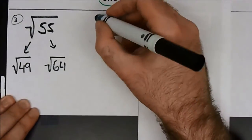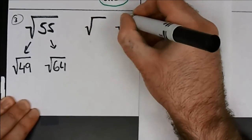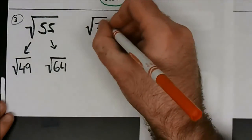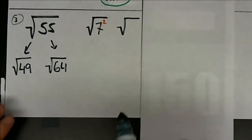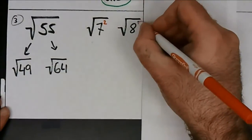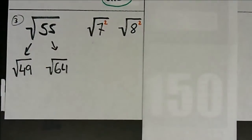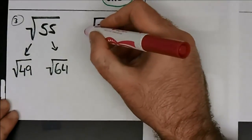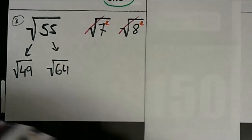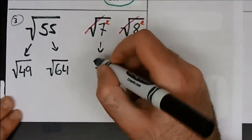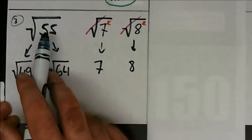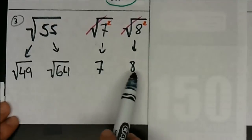So I'm going to write them up here. 49 in its exponential form can be written as 7 squared — we're going with our principal exponential forms, the positive ones. And 64 can be written as 8 squared. Then, since both the radical and the exponent are of the same power, I'm going to cancel them out. The radical and the exponent are opposites — they're gone. That leaves me with 7 as the answer to the square root of 49, and 8 as the answer to the square root of 64. So I'm looking for the square root of 55, which is in between these two.